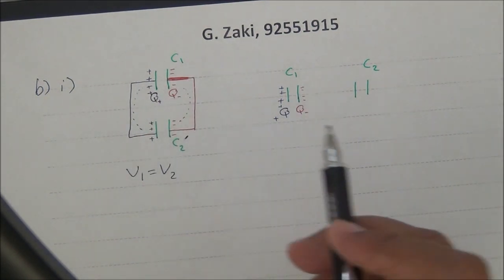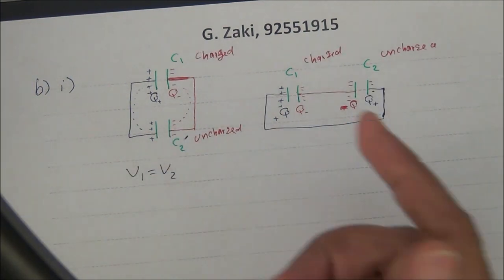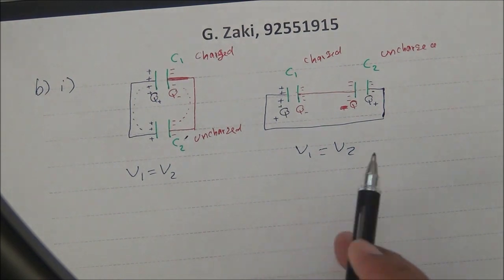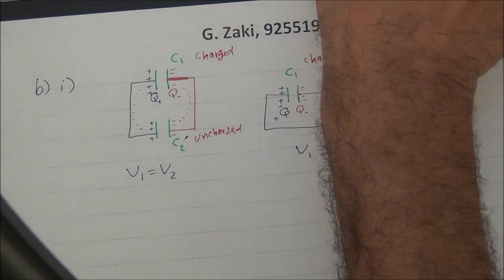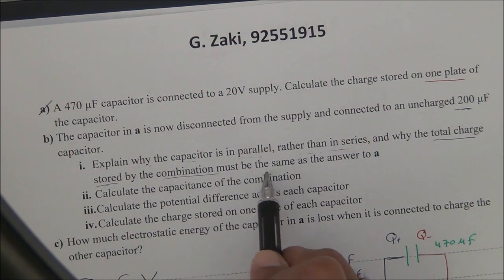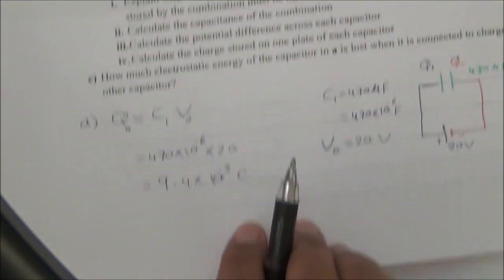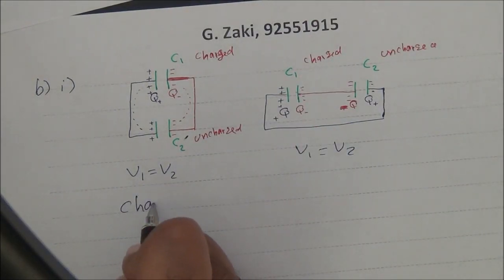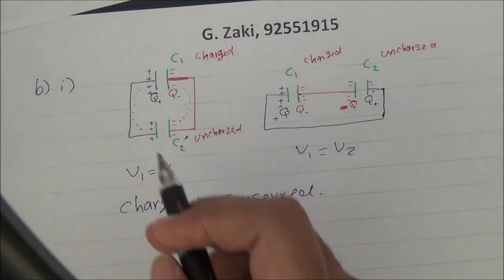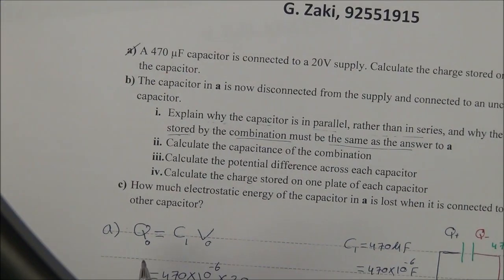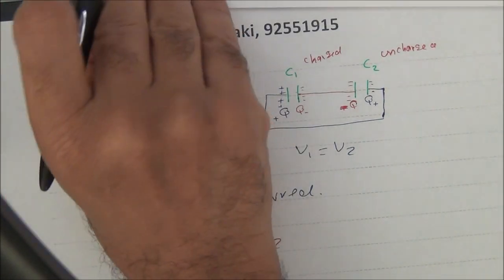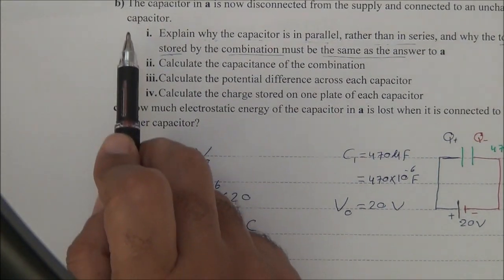This process continues and stops when V1 equals V2, meaning they are in parallel connection. The total charge stored by the combination must be the same as in part A because charge is conserved. So Q₀ = Q1 + Q2.